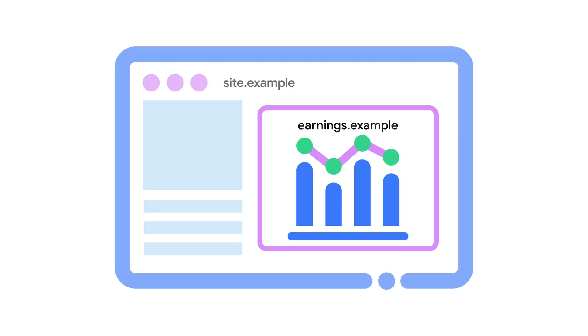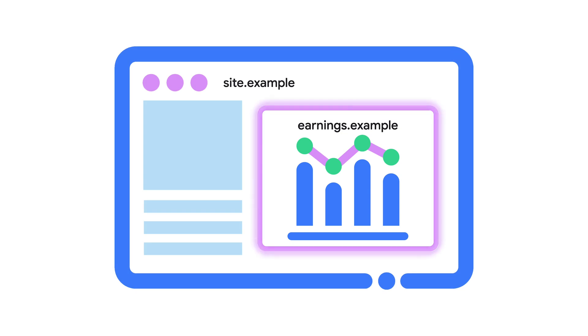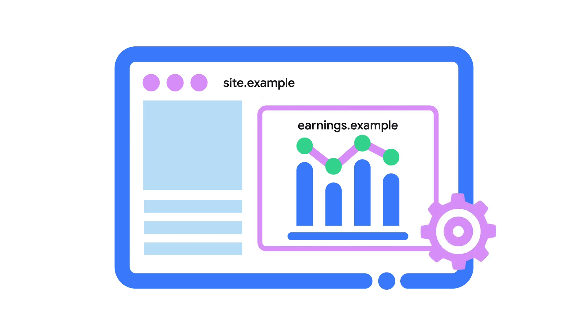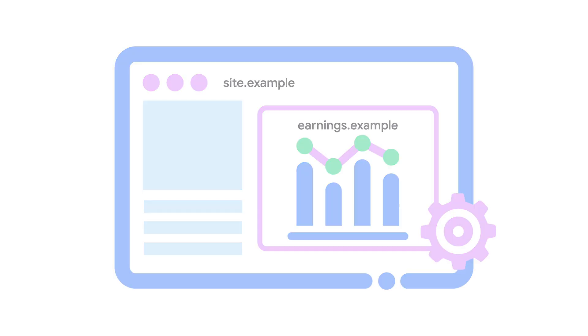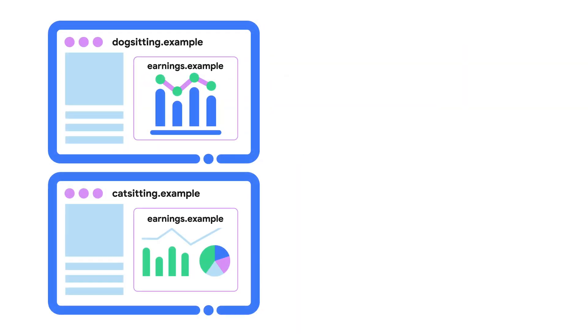Let's take a look at examples that do rely on third-party cookies. Imagine you distribute a handy earnings dashboard widget, earnings.example. The widget can be embedded on different sites. The widget stores user settings, such as widget appearance, currency, or frequency of notifications. These settings don't necessarily need to be shared across different embedding sites — the user wants to tailor the settings for each site.